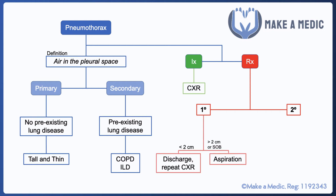In the case of a primary pneumothorax, if the pneumothorax is less than two centimeters in width and there is no significant shortness of breath, then the patient may be able to be discharged with a follow-up chest X-ray to check for resolution.